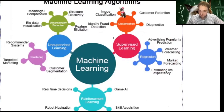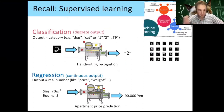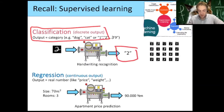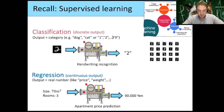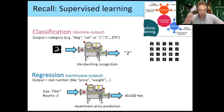Recall that in supervised learning there were two classes: classification and regression. The main difference between these two types is the output. In the classification case, the output is always something discrete — there are different classes. In the regression case, the output is something continuous, meaning it's a number which can take any value.